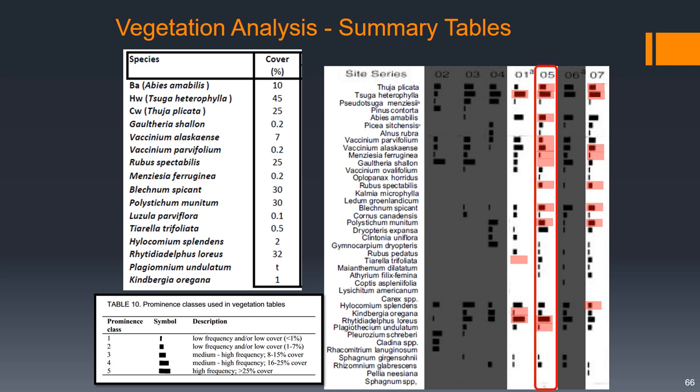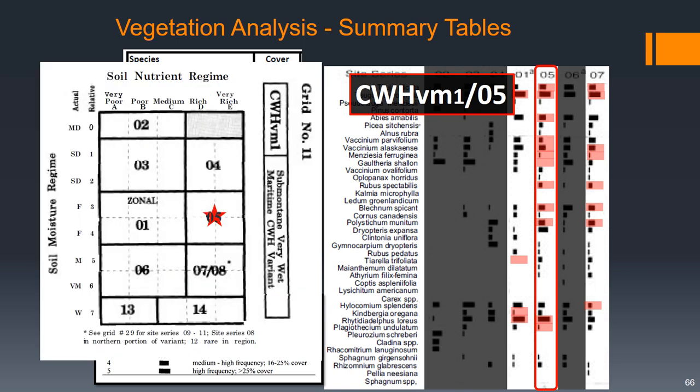From these, I think we can say that the vegetation we found best matched the existing reference for site association 5, and that corresponds to a site series of CWH VM1/05. So that puts us there on the edatopic grid.